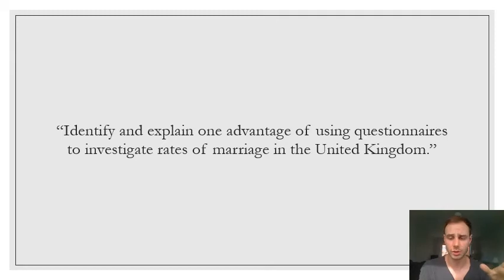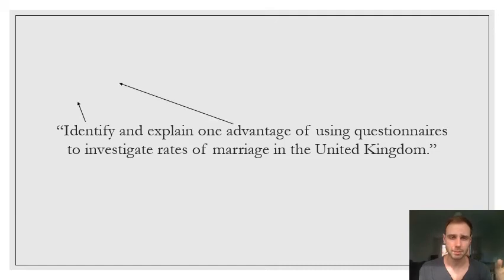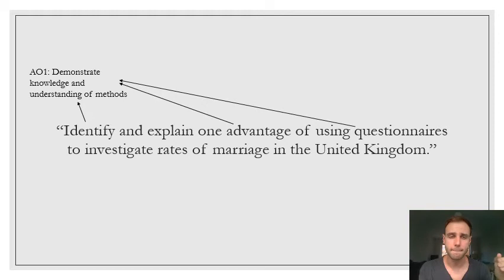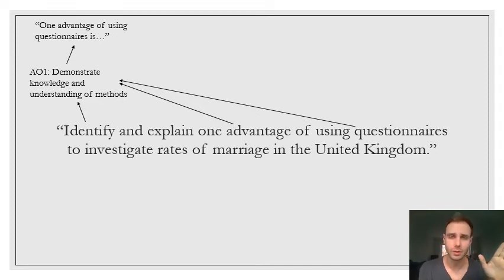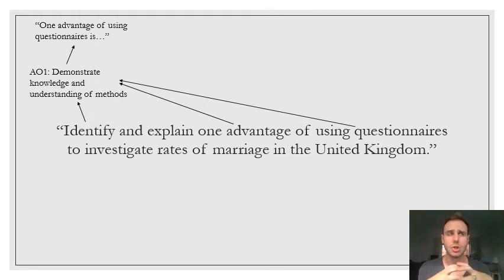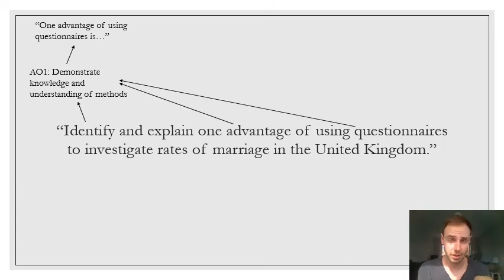The first thing you do with this question is address AO1 — demonstrating knowledge of social research methods. You identify an advantage of a questionnaire. That would look like: 'One advantage of using questionnaires is...' — nice and simple, clear for the examiner, and that is your first sentence. This gives a general advantage of a questionnaire without yet relating it to the context.